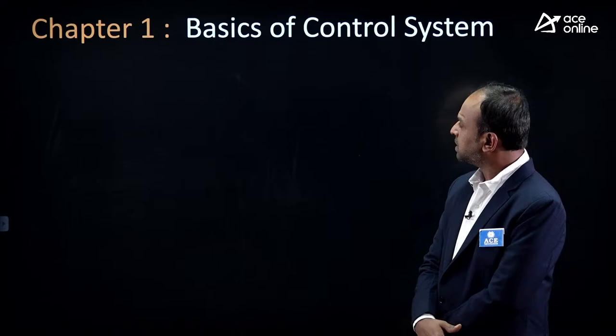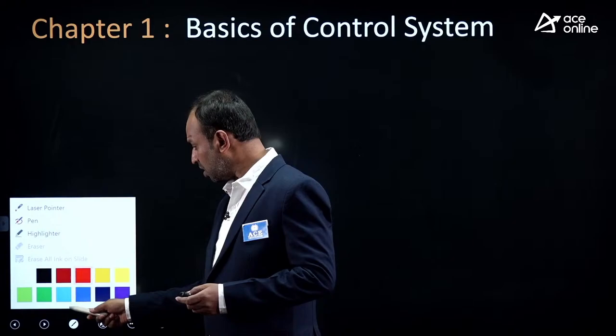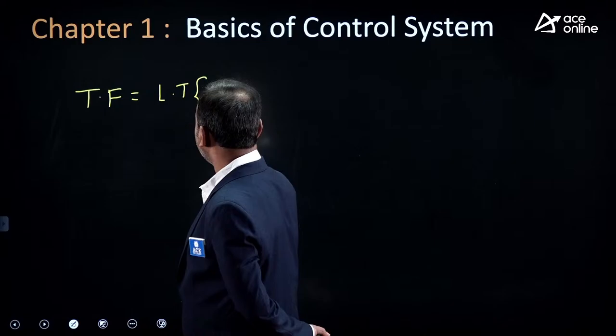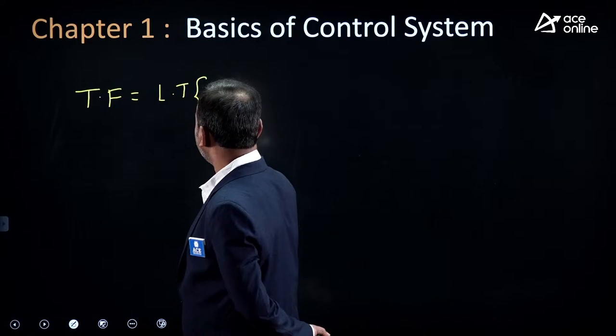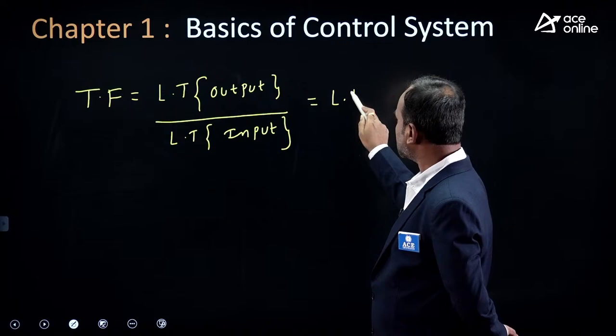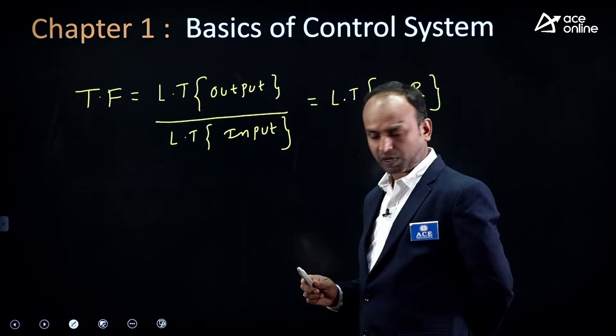First chapter: Basics of Control System. We start with the transfer function. Transfer function formula: Laplace transform of output divided by Laplace transform of input, with all initial conditions assumed to be zero. The second formula: transfer function equals the Laplace transform of the impulse response.